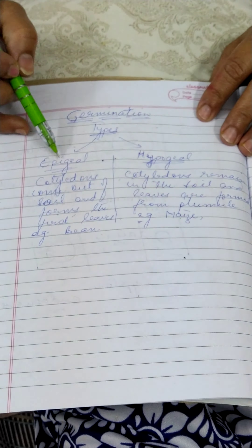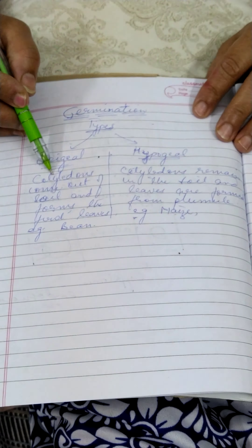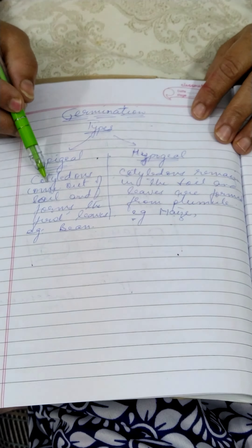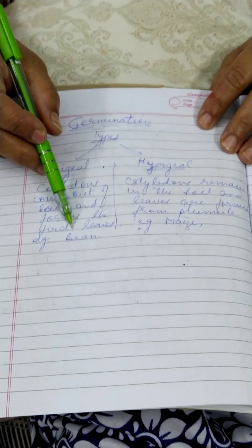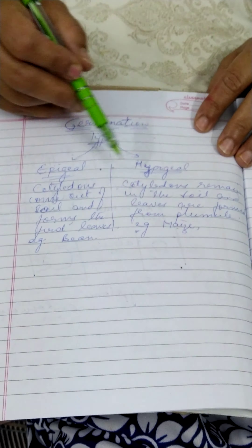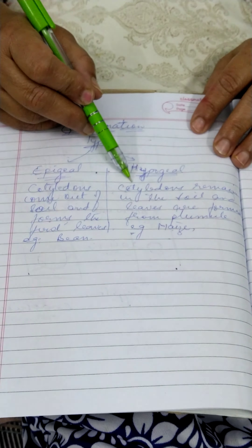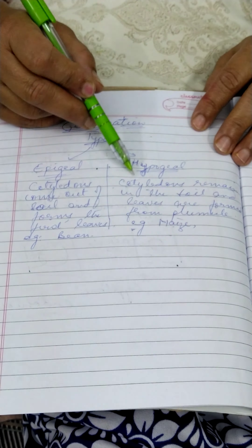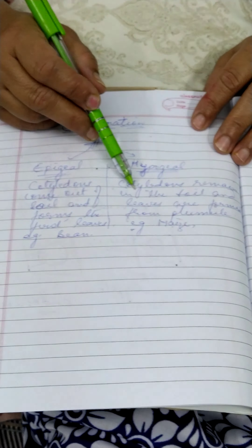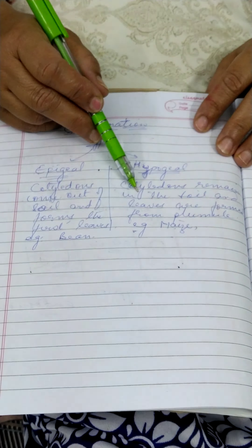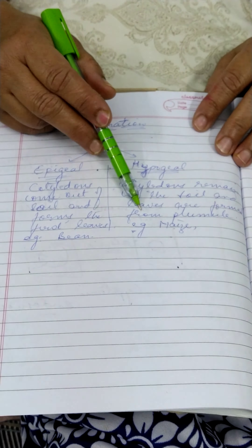In epigeal germination, the cotyledons come out of the soil and they form the leaves of the plant. That is found in the bean plant. In hypogeal germination, the cotyledons of the seed remain inside the soil and the leaves are formed by the plumule part of the embryo. That is present in the maize plant.